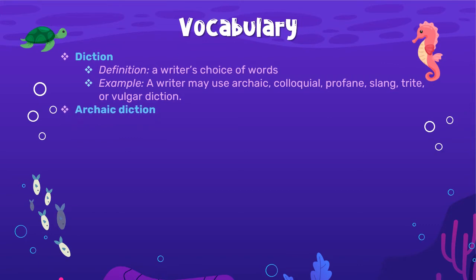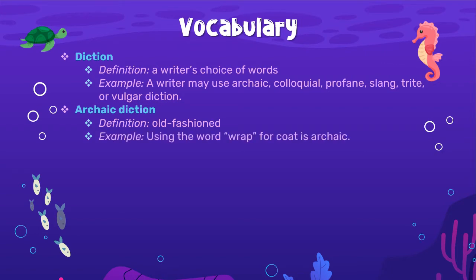The first one is archaic diction. This diction type is just old-fashioned — meaning it uses something that's old, not really in style anymore. For example, the word 'wrap' for coat is archaic. We don't really use the word 'wrap' to mean coat anymore; we just say coat or jacket. We wouldn't say, 'I need to go put on my wrap, it's cold outside.' But people used to. So that is an archaic word — it's an old word that used to be used, but not anymore.